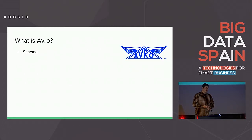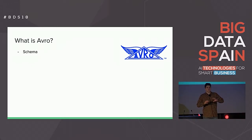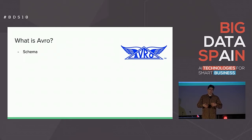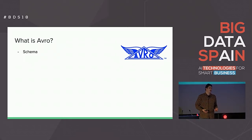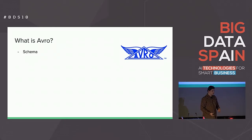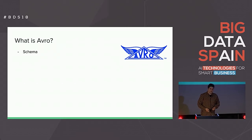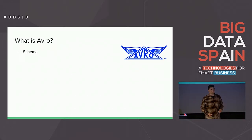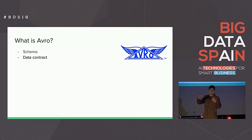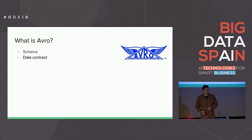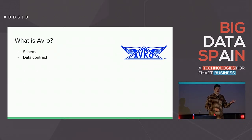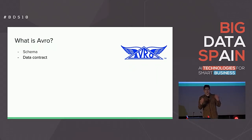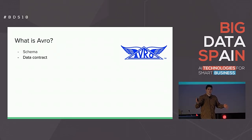So what is Avro? Avro is a data serialization system. It's an Apache project. Avro gives your information a structure. With Avro, you can define a schema of your information — you can say this is a string field, this is an integer field. This is a schema, as we know from databases or from XML structures.